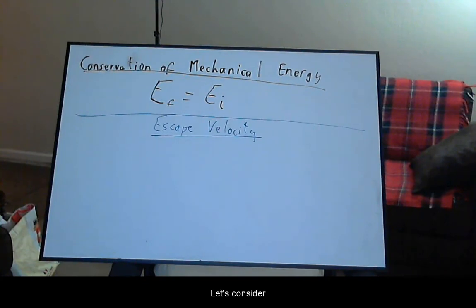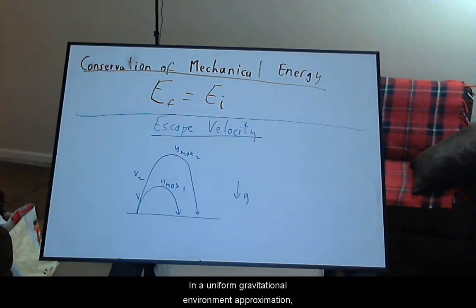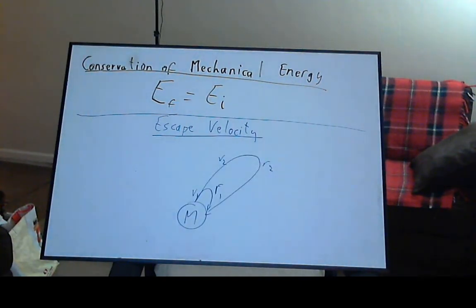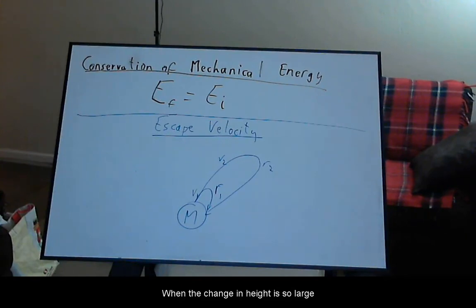Let's consider the application to escape velocity. In a uniform gravitational environment approximation, we can calculate how high an object goes based on its initial vertical velocity. We can use conservation of mechanical energy for this. When the change in height is so large that gravity can no longer be approximated as uniform, we need to use the universal law version of the conservation law.